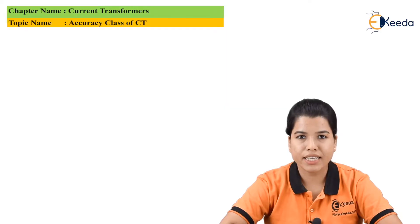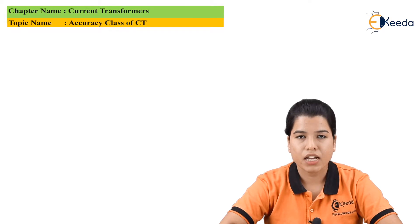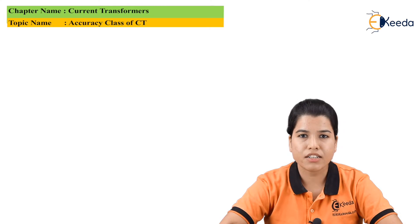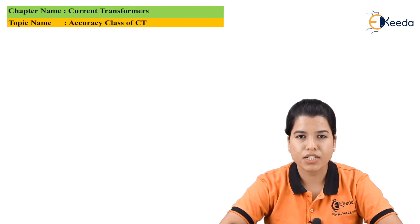Basically, CT — that is current transformer — is nothing but an instrument transformer. It works either as a measuring instrument or in conjunction with a protective relaying system. The primary winding of the CT has a large number of turns, whereas the number of turns of the secondary winding are relatively very small. So CT is basically a step-down transformer.